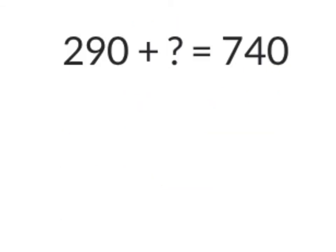Okay, let's have a look at another one of our change unknown problems. This time I have 290 and I want to know how much more I need to add on to that to get me to 740. So first of all I'm going to make my 290 go up to 300 because that's going to make it easier. So I know that if I go 290 plus 10 that will get me to 300.